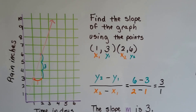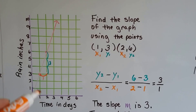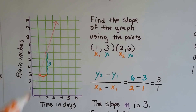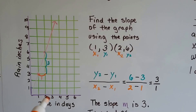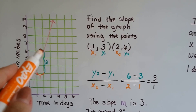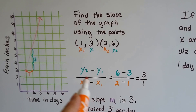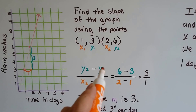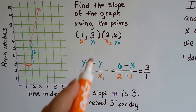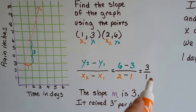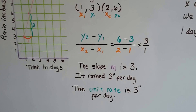We find the slope of the graph using the points (1, 3) and (2, 6). We calculate y2 minus y1, which is six minus three, over x2 minus x1, which is two minus one, giving us three over one. Three divided by one means the slope m is three.